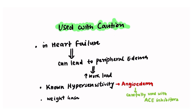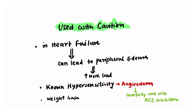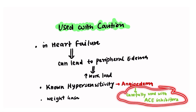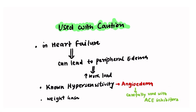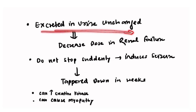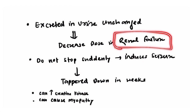Some points of clinical importance: pregabalin should be used with caution in patients with heart failure, as it can cause peripheral edema and increase the workload of the heart. In patients with known hypersensitivity, it should be used cautiously as it can cause angioedema — notably also a side effect of ACE inhibitors — so caution is warranted in patients on ACE inhibitors. On long-term use it can cause weight gain, so weight must be monitored. The drug is excreted unchanged in urine, so doses must be reduced in patients with renal failure.